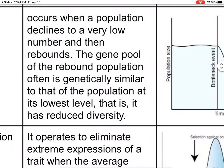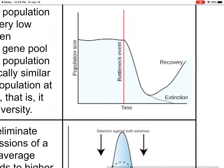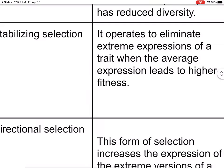Bottleneck occurs when a population declines to a very low number and then rebounds. The gene pool of the rebound population is often genetically similar to the population at its lowest level — it has reduced diversity. You have a stable population, something happens to their environment or food supply, maybe a water drought, and then it rains, there's a recovery, and the species that comes back is very similar to the one that was dying off.